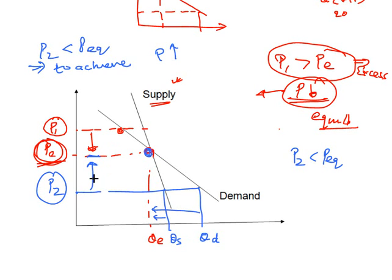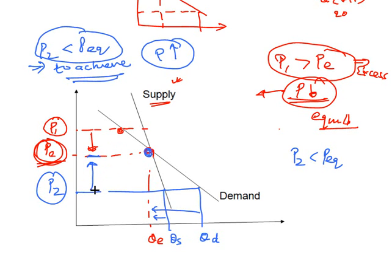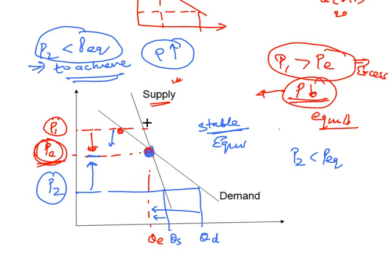To summarize: when the price is less than equilibrium, the price must rise to reach equilibrium; when the price is more than equilibrium, the price must decrease. In either case, slight deviations self-correct and return to equilibrium. This type of behavior is called stable equilibrium, because even if you make a slight adjustment the system will come back to meet the equilibrium.